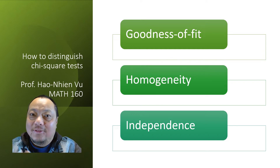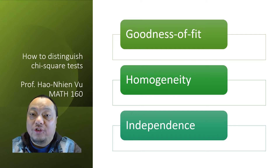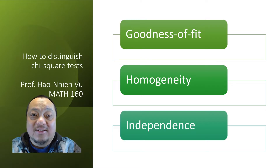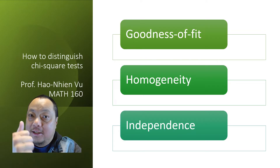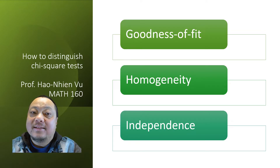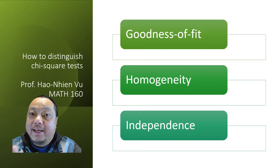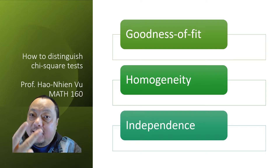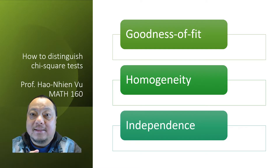Hi. In this video, I'll show you how to distinguish between the different chi-square tests: the goodness-of-fit test, the test of homogeneity, and the test of independence.